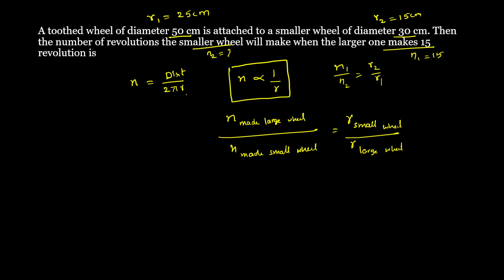Using the formula: 15/n = 15/25. Cross-multiplying, the 15s cancel and we get n = 25. So the smaller wheel makes 25 revolutions. Just remember this formula — thank you.